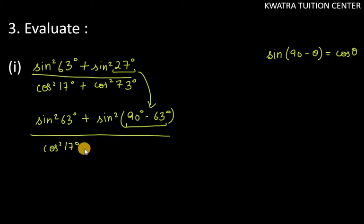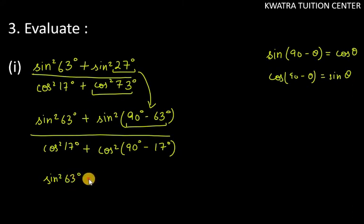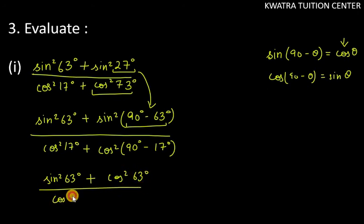Cos square 17 degree. Now for cos square 73 degree, we use cos square(90 minus theta) equals sin square theta. So cos square(90 minus 17) becomes sin square 17 degree. So the denominator becomes cos square 17 degree plus sin square 17 degree.